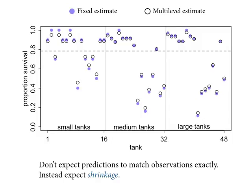The open points are the posterior means from the multilevel estimates — the alpha sub tanks for each tank; there are 48 of them. I want to draw your attention to the phenomenon: there's a gravitational force induced by that dashed line. All of the open points have drifted towards it relative to the blue points they are paired with. One estimate comes from a traditional fixed effects model; the other is the multilevel estimate. This pattern is called shrinkage — they have all shrunk towards that horizontal dashed line relative to the blue points.